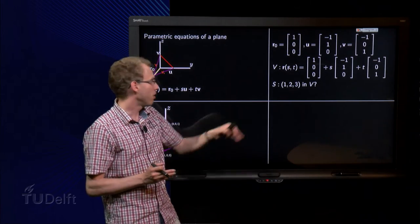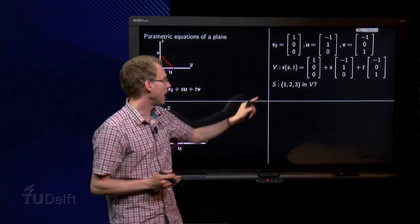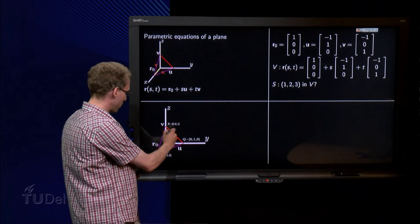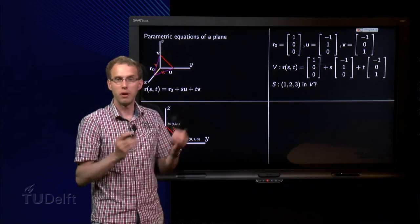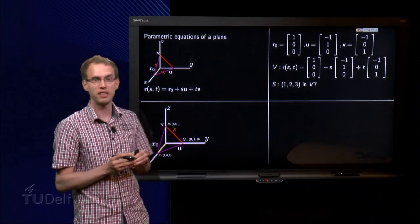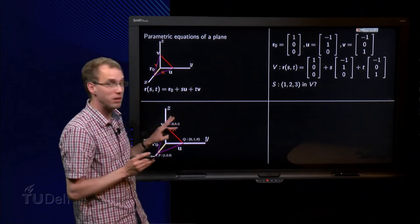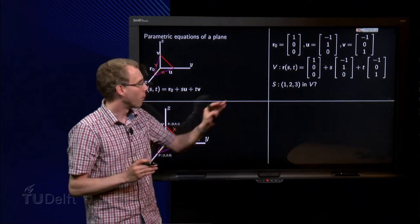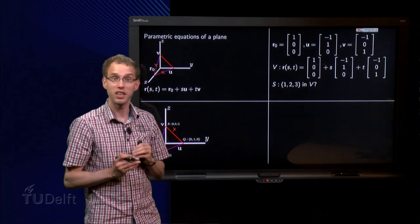And how can we use it? Well, for example, if we wonder whether the point S with coordinates 1,2,3 is in V. Well that is somewhere over here, but it is very hard to tell from such a picture whether it is in the plane or not. Probably not if you look at the picture, but how can we know it for sure? Well, we can use our parametric equation for that.